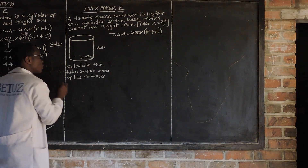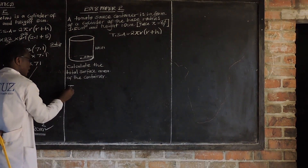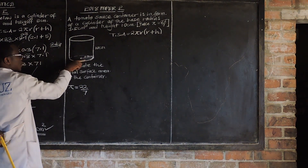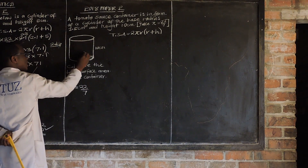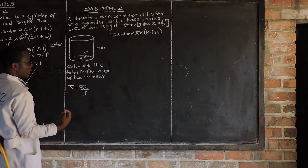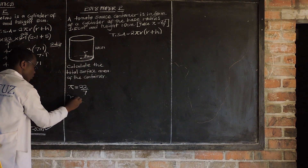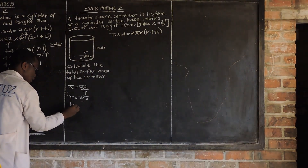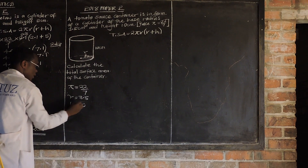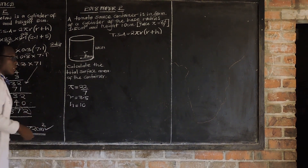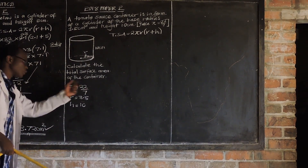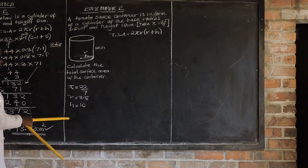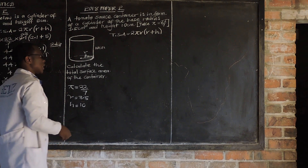So let us look at what we have. You've been given pi = 22 over 7, the base radius = 3.5, and the height = 10. So when you substitute into your formula, pi is 22 over 7, the base radius is 3.5, and the height is 10. So we substitute: 2 × (22/7) × 3.5 × (3.5 + 10).